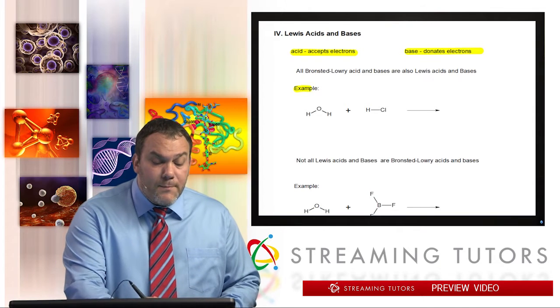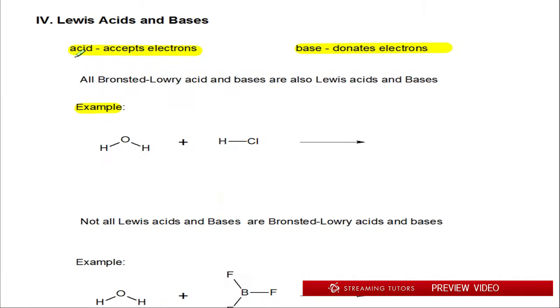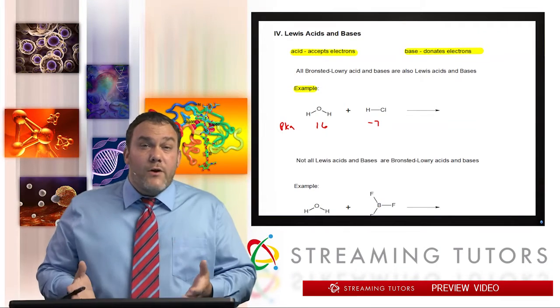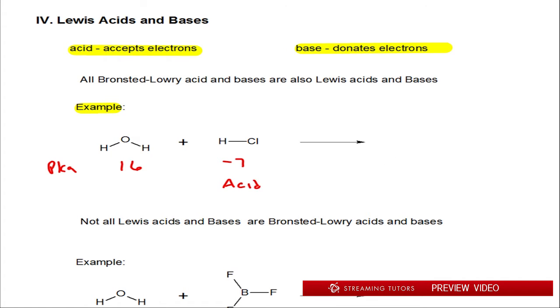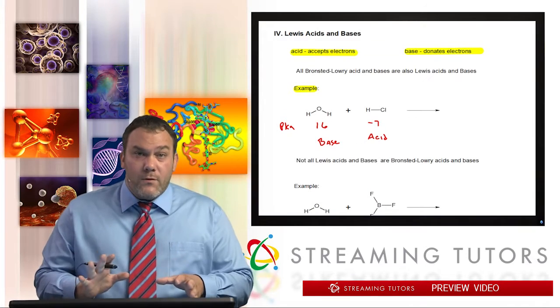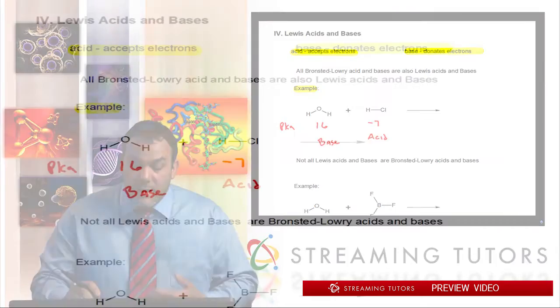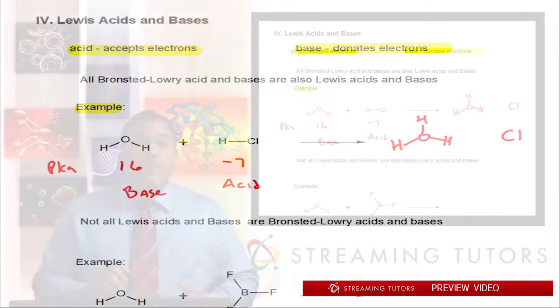This first example is going to show us that. If we recall from our Bronsted-Lowry video, we have HCl, which pKa is around negative 7, and water is around 16. So for sure, hydrochloric acid is the acid, and this is the base. If we think about it from either point of view, Lewis or Bronsted-Lowry, the water winds up picking up a proton and the Cl winds up losing a proton.